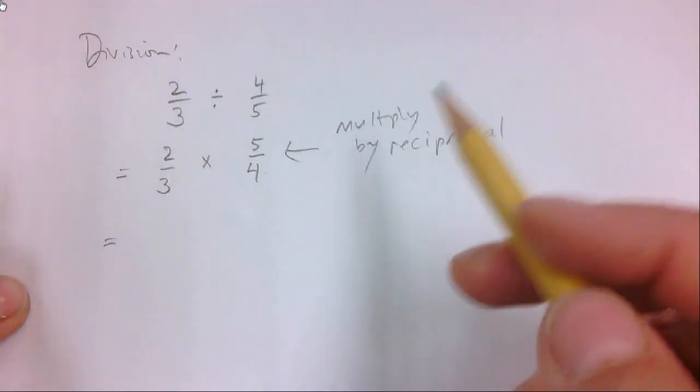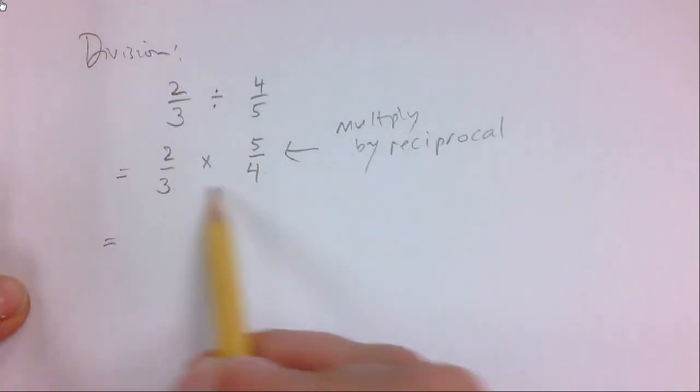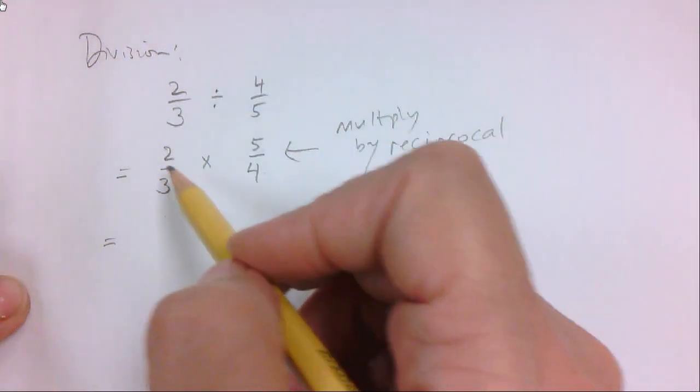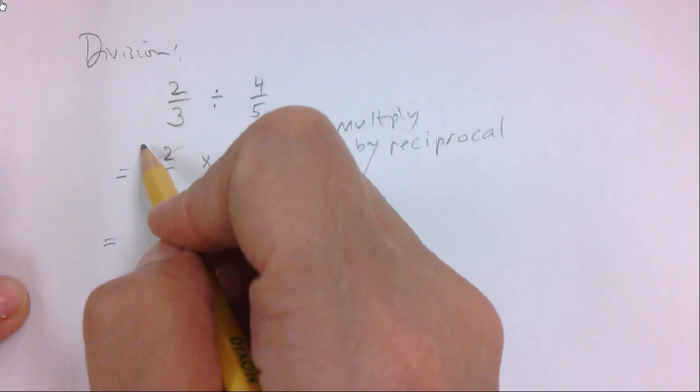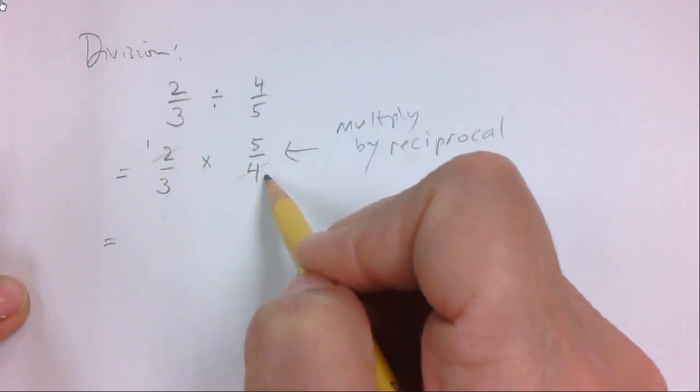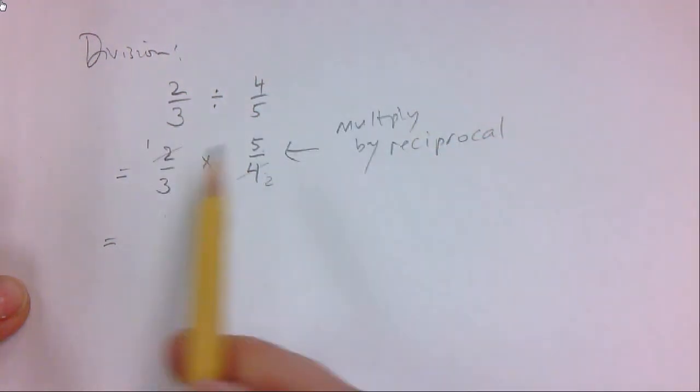Why don't we use the little cancelling thing. I notice I have a 2 and a 4. I could multiply straight across and get 10 over 12, and then reduce 10 over 12. But right away, I see there's a 2 and a 4, it's a wonderful opportunity to divide both of them by 2. And now when I multiply straight across, I get 5 over 6, and there's nothing to reduce.